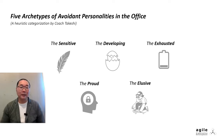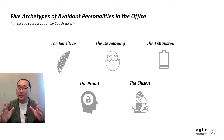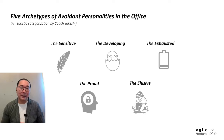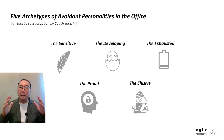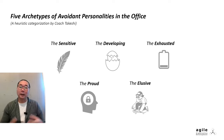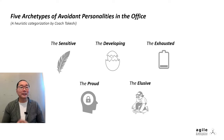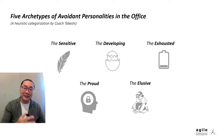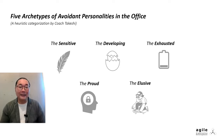And here's my result: five archetypes of avoidant personalities — specifically, five archetypes of avoidant personalities in the office. This is based on my own heuristics, that is experience, so they may not be entirely comprehensive and I most likely have biases. However, for a thought exercise, these categories should be helpful. Let's explore these five categories: the sensitive, the developing, the exhausted, the proud, and the elusive.